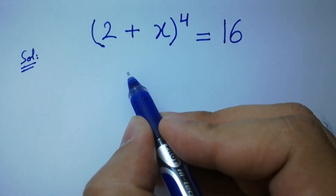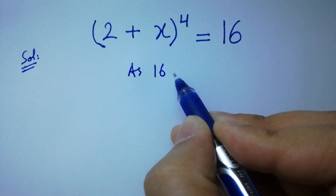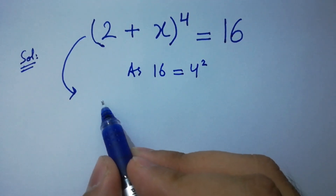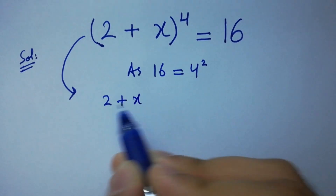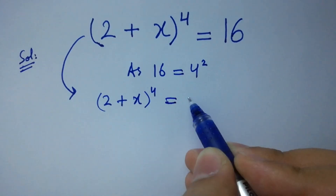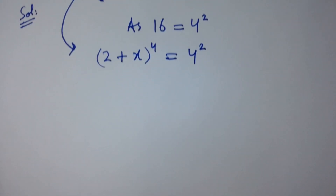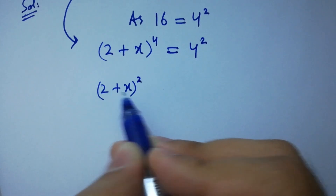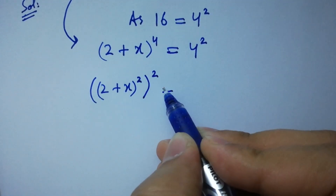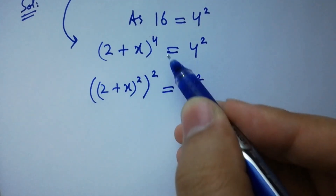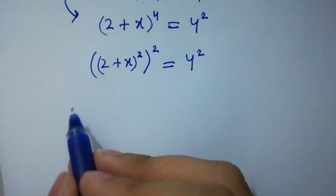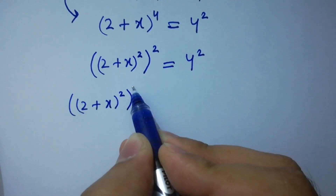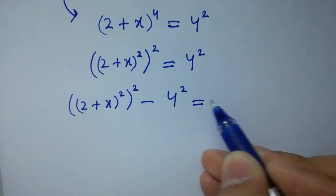As 16 equals 4 squared, then it will be (2 + x) to the whole power 4 equals 4 squared, which is the same as (2 + x)² to the whole power 2 equals 4 squared, since 2 times 2 is 4. However, it can be written as (2 + x)² whole squared minus 4 squared equals 0.